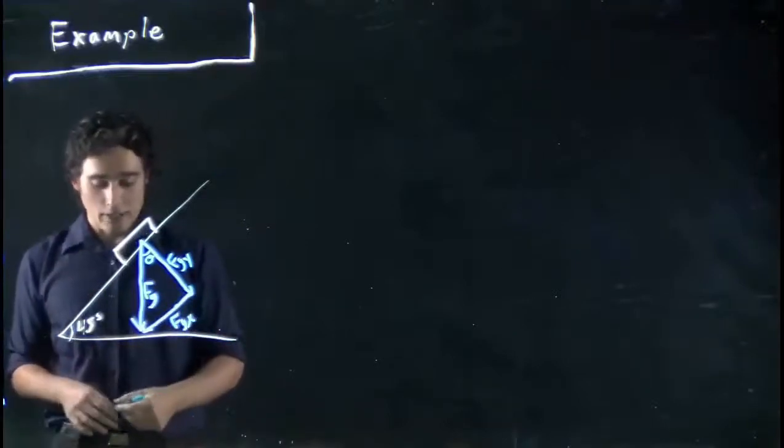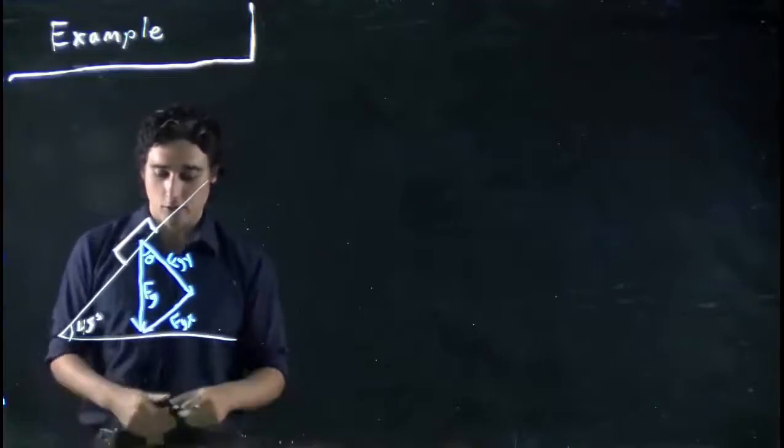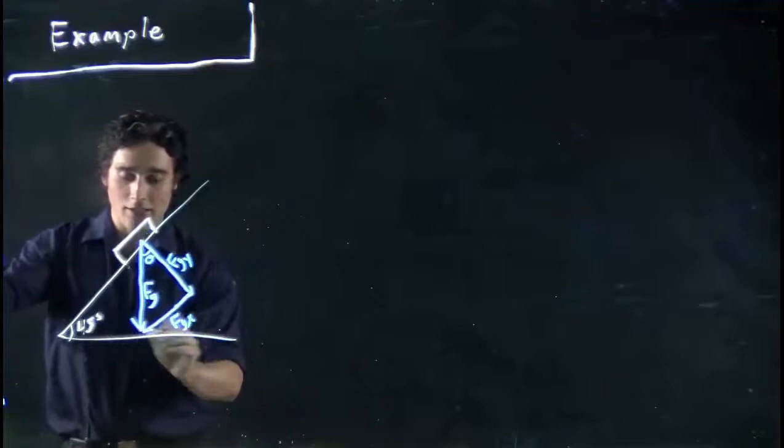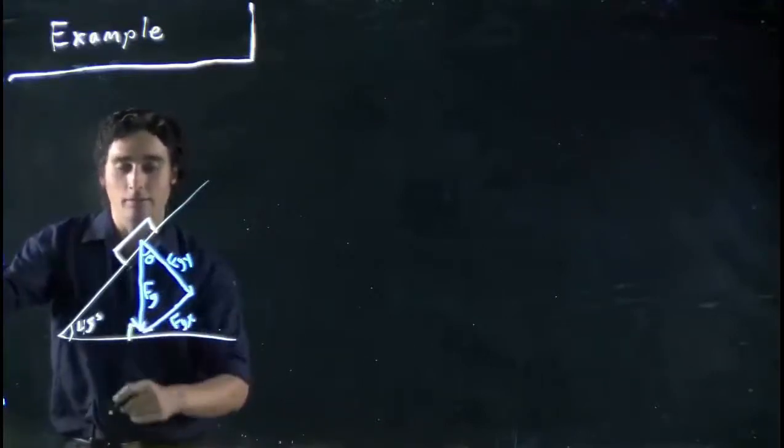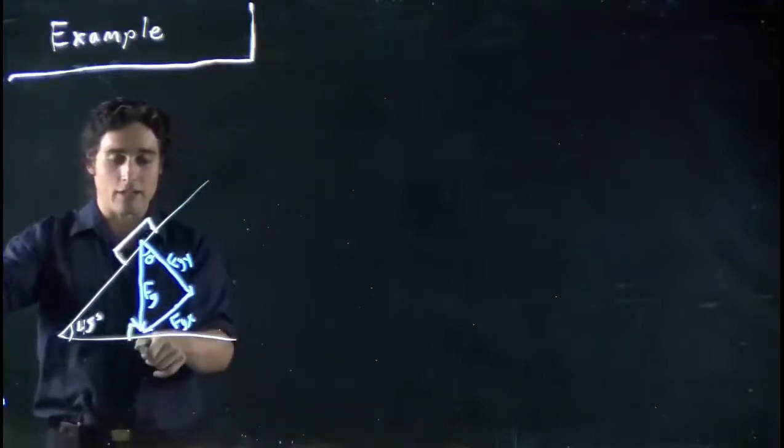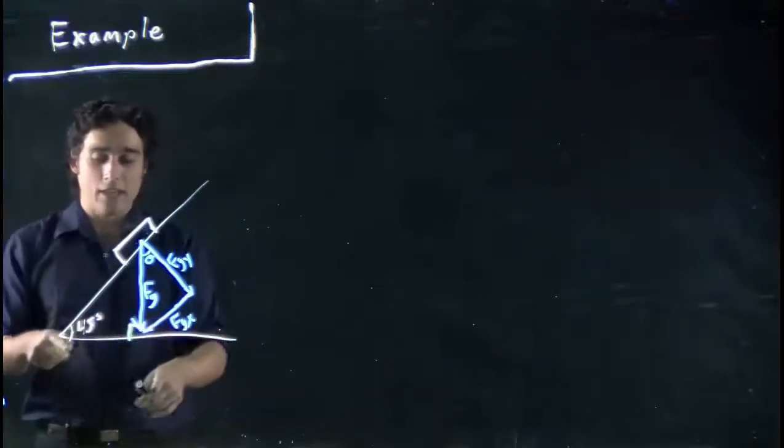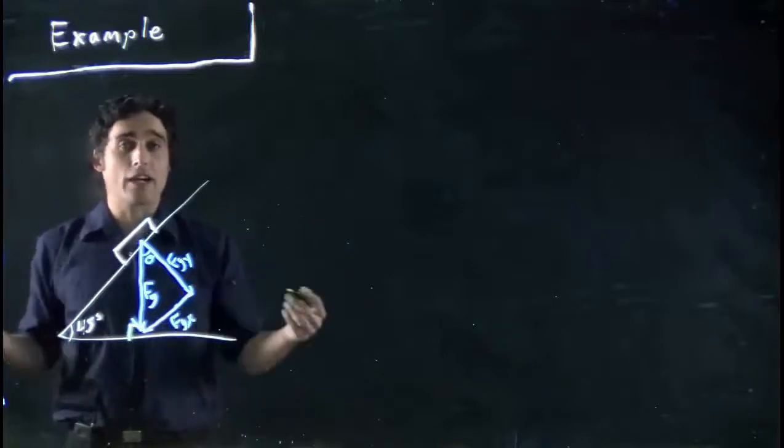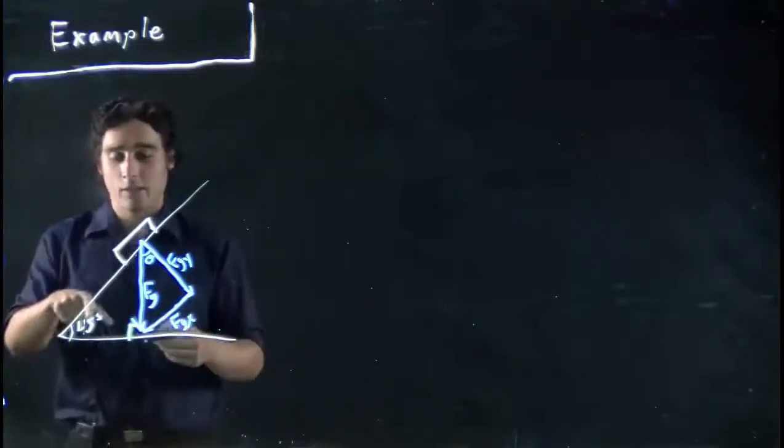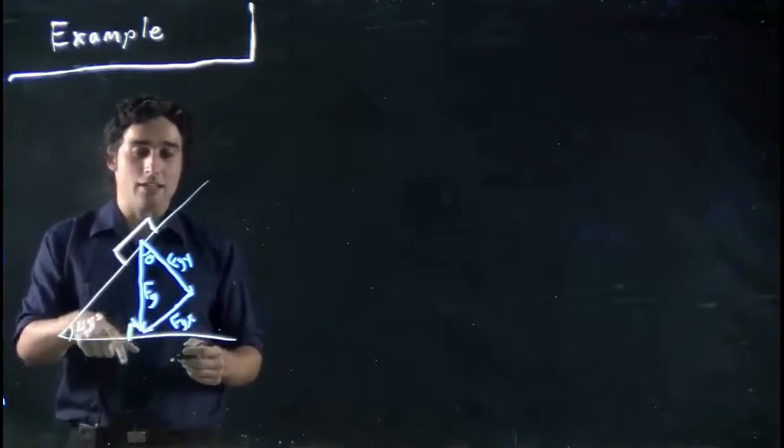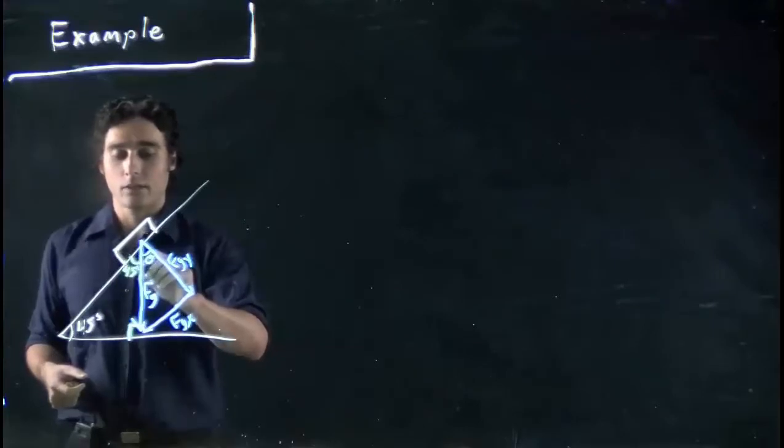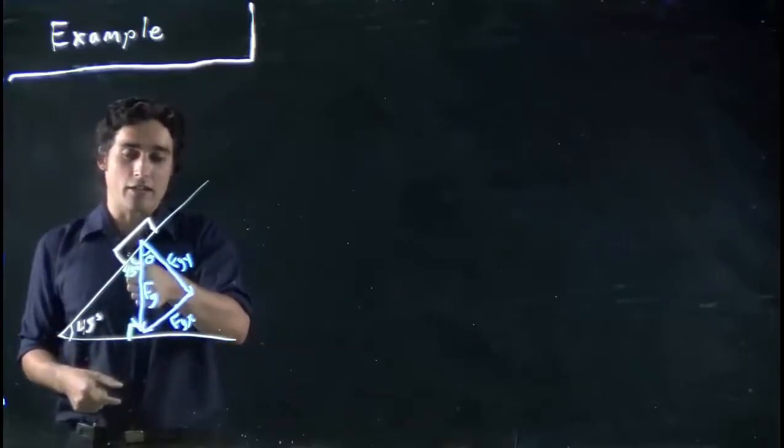We're going to have to use some knowledge of triangles. Because since this is straight down, and this is a flat ground, this should be a 90 degree angle. Force of gravity straight down, so this should form a 90 degree. And if this is 45, well this should also be 45. Remember, a triangle adds up to 180. So 45 plus 90 is 135, plus 45 is 180.